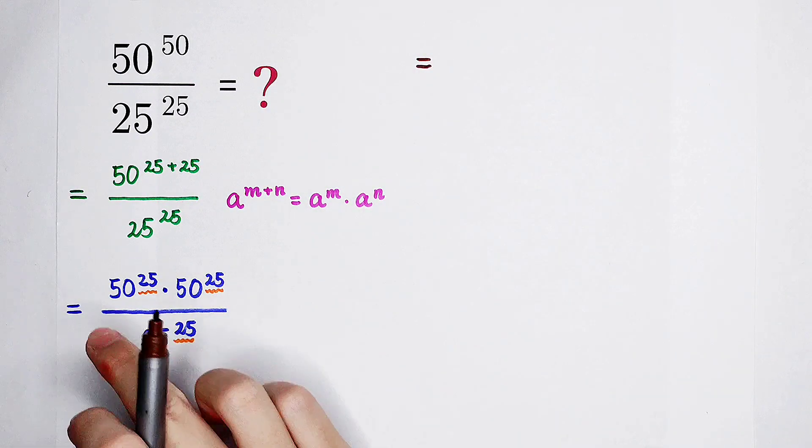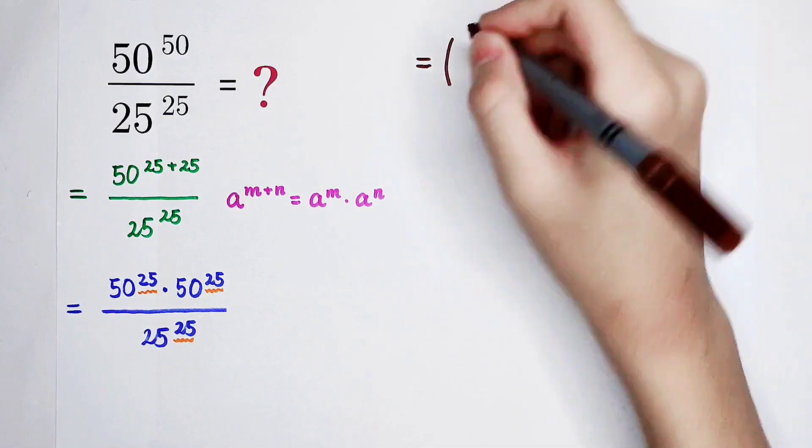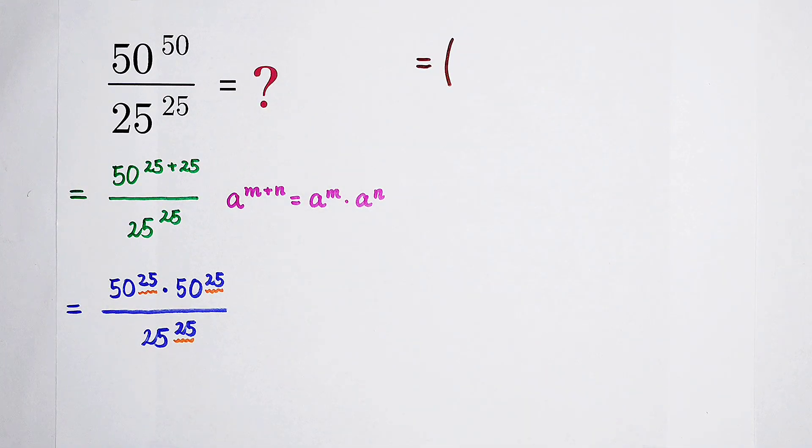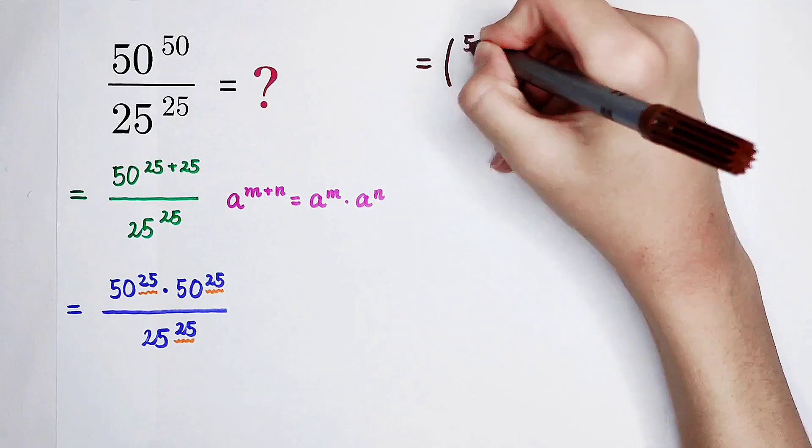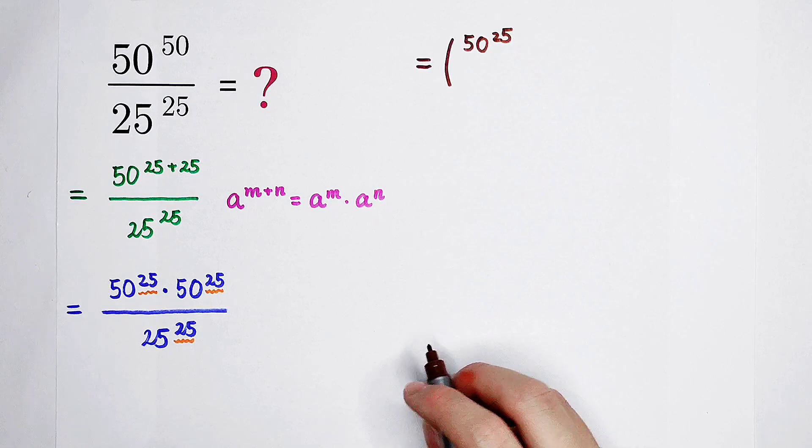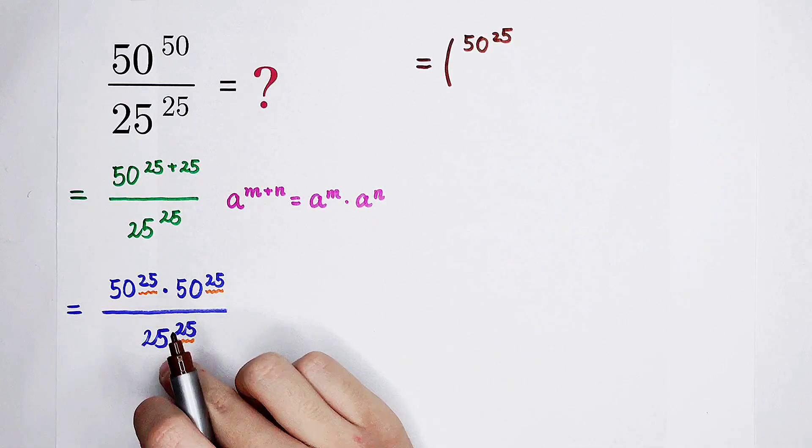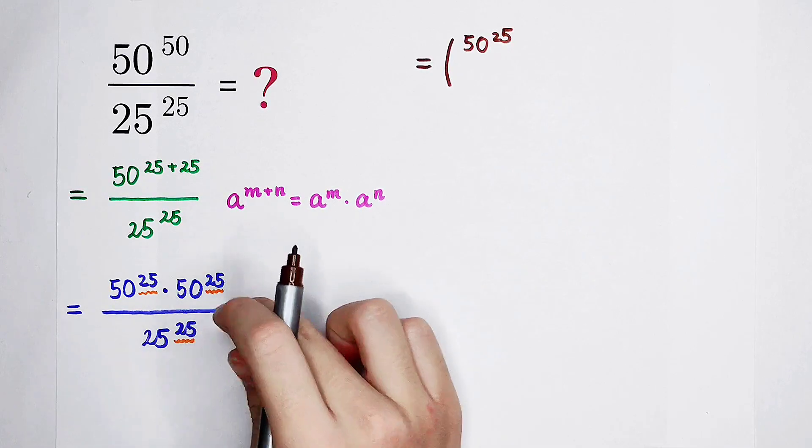As our next step, because here appear two times the 50 to the power of 25, so let this denominator belong to one of them. That means I would like to write this huge fraction as a small fraction and then times an integer. So that means I'm going to write 50 to the power of 25 divided by 25 to the power of 25 first, and then times 50 to the power of 25.